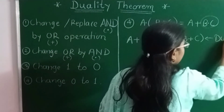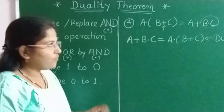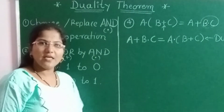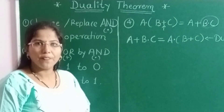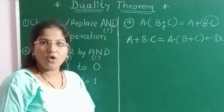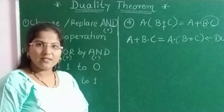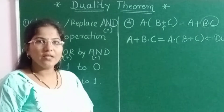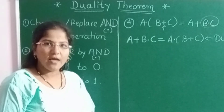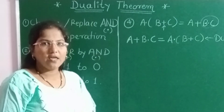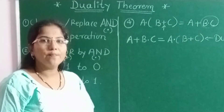This is how very simple it is to find the dual of any Boolean expression. You have to remember only four things: first, replace dot by plus; second, replace plus by dot; third, replace 1 by 0; and fourth, replace 0 by 1.